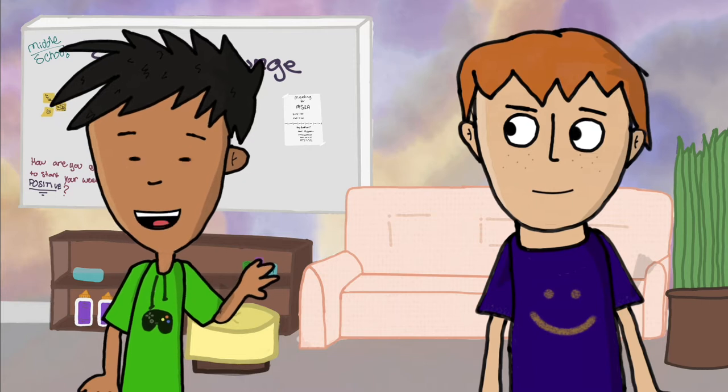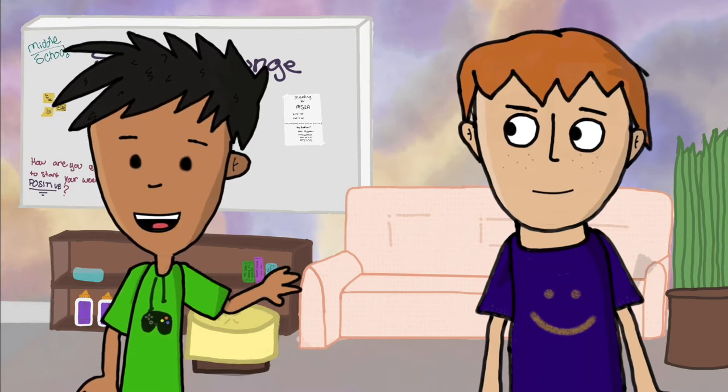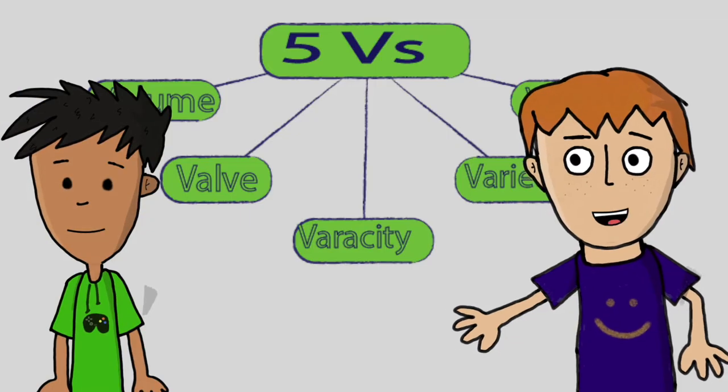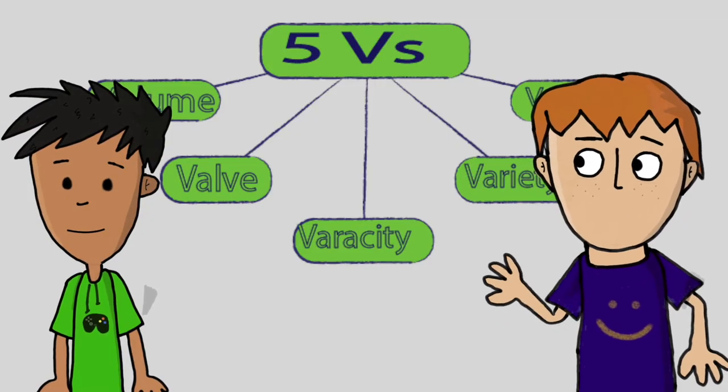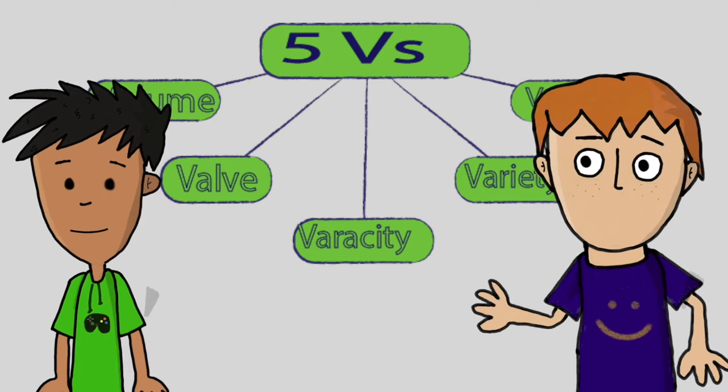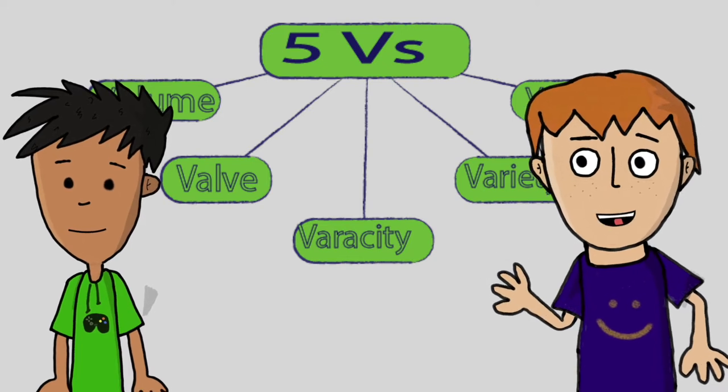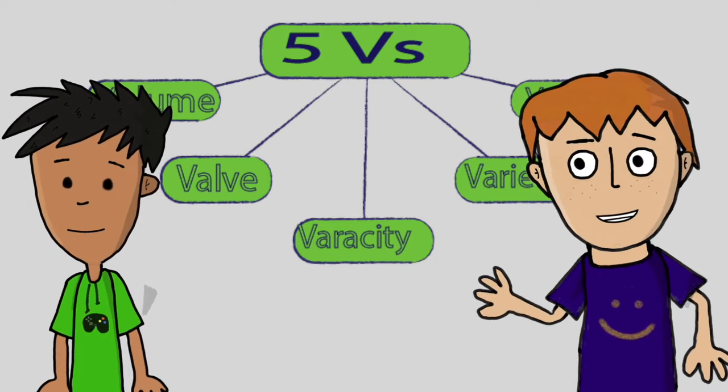I also heard about the five Vs. What are they? They are velocity, variety, volume, value, and veracity.